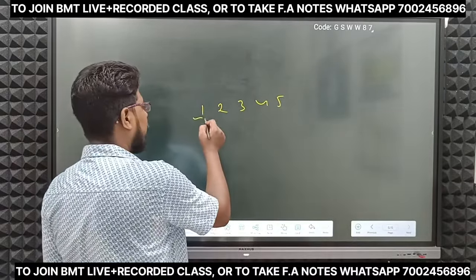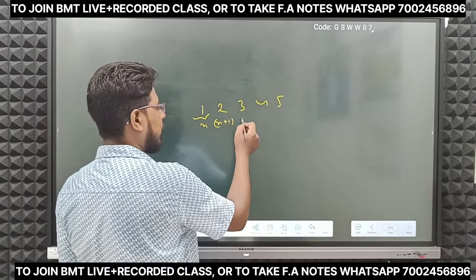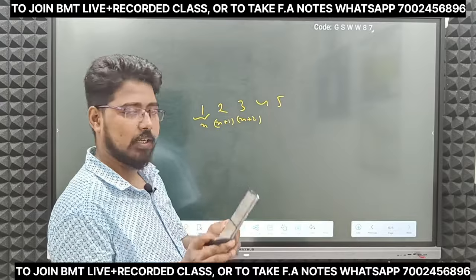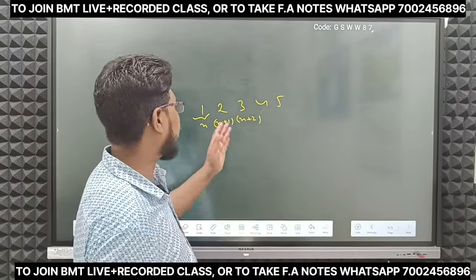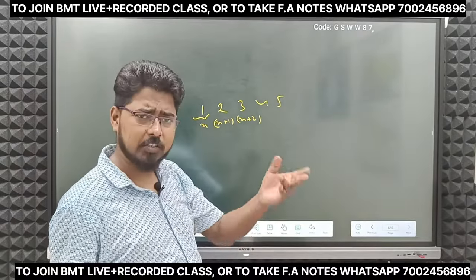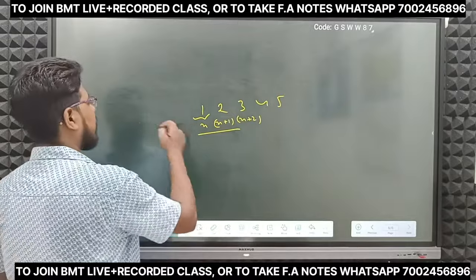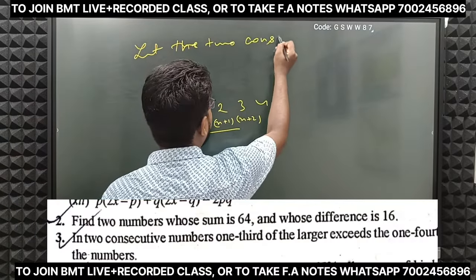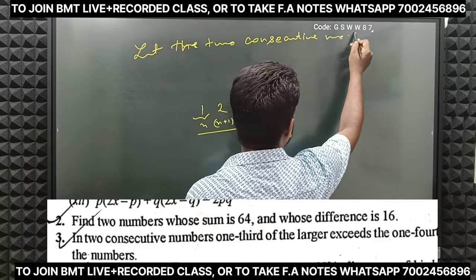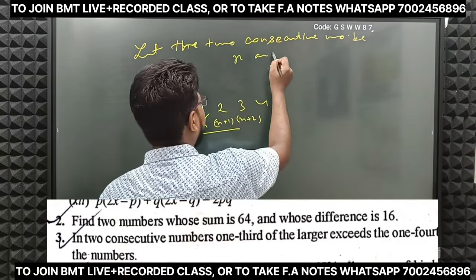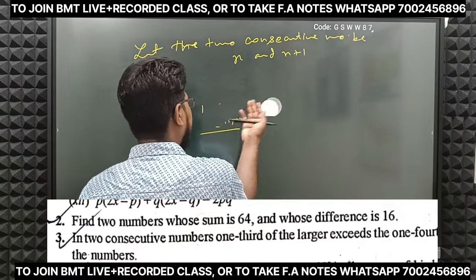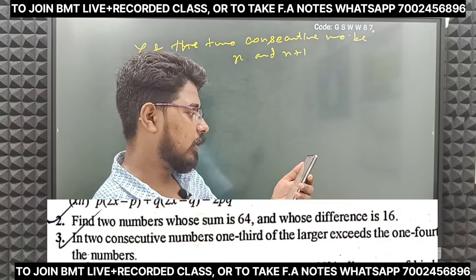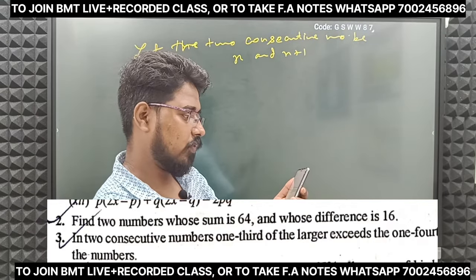So if we call the first value x, the next value will be x plus 1. If it were x plus 2, that would be for every other consecutive. Since it says two consecutive numbers, let the two consecutive numbers be x and x plus 1.